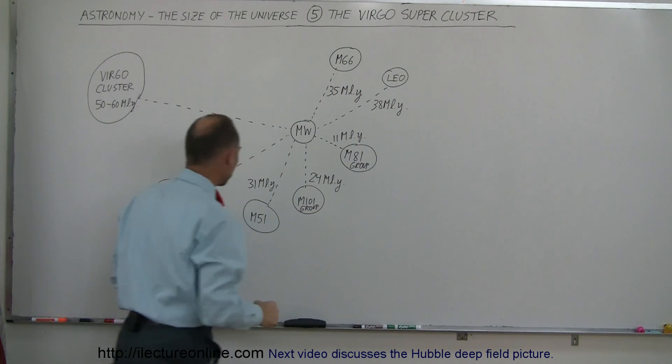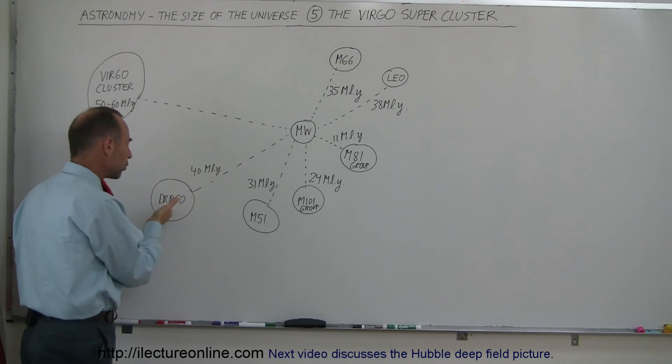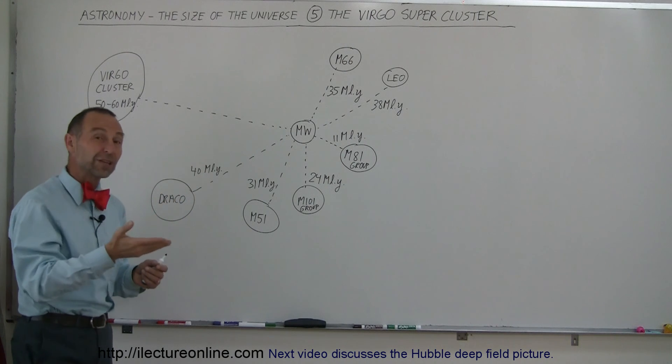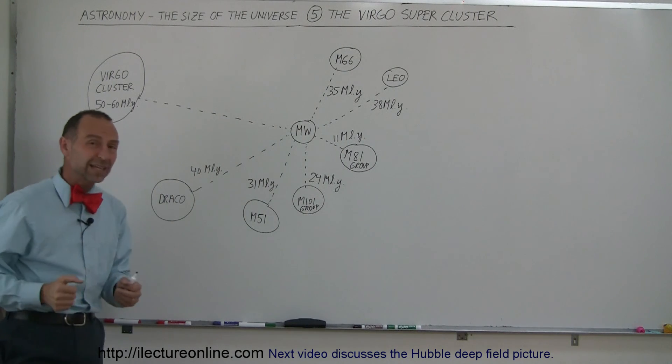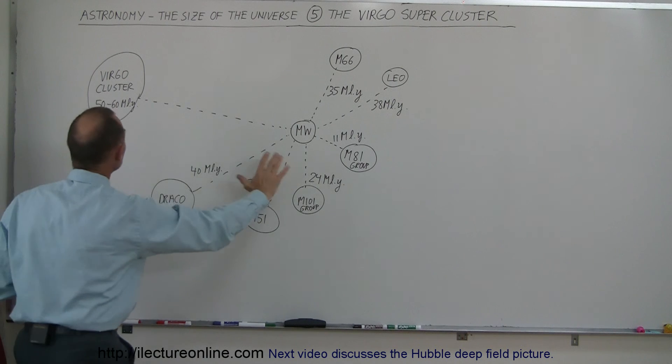The M66 group, 35 million light-years. And over here, the Draco group, when you look in the direction of the constellation Draco, 40 million light-years. And then, when we look in this direction, we see the Virgo cluster of galaxies.